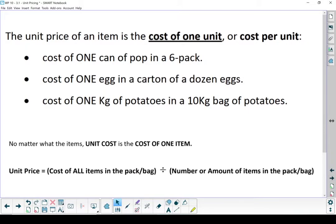The unit price is the cost of all the items in the pack or in the group, divided by the number of items you've got. Let's go through a couple examples.